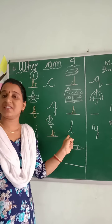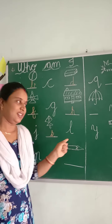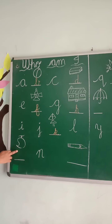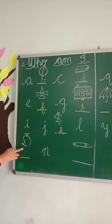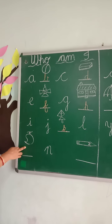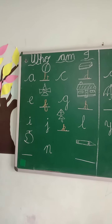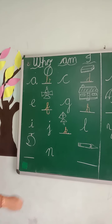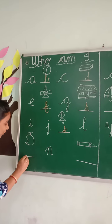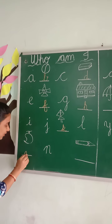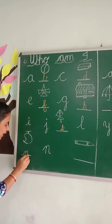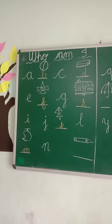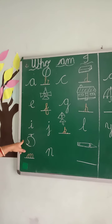Then K is followed by L. Come to the next picture. Which picture is this? It is a mango. Mango starts from which letter? M. M for mango.